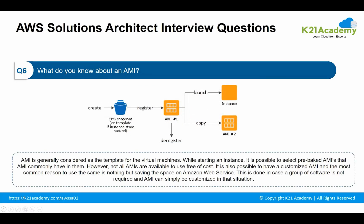The next question: what do you know about an AMI? AMI is generally considered a template for virtual machines. While starting an instance, it is possible to select pre-packaged AMIs. However, not all AMIs are available free of cost. It is also possible to have a customized AMI, and the most common reason to use one is to save space on Amazon Web Services. This is done when a group of software is not required and the AMI can simply be customized in that situation.